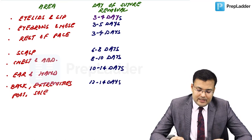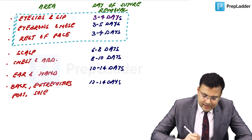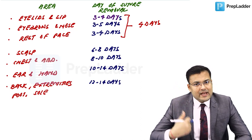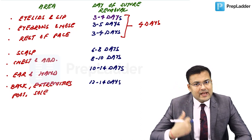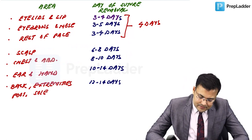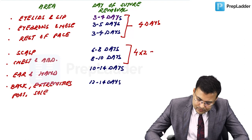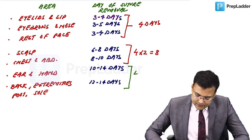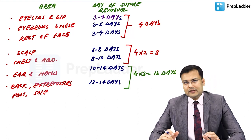To remember suture removal timing: face areas (excluding ear) — approximately 4 days; scalp, chest, and abdomen — 4×2 = 8 days; ear, hand, back, extremities, foot, and sole — 4×3 = 12 days.